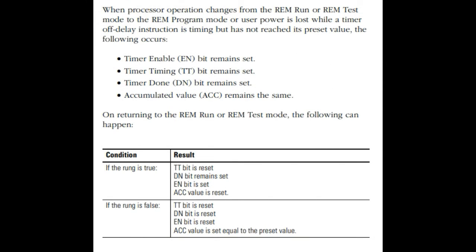When processor operation changes from the run or test mode to the program mode, or user power is lost while a timer off delay instruction is timing but has not reached its preset value, the following occurs: Timer enable EN bit remains set. Timer timing TT bit remains set. Timer done DN bit remains set. Accumulated value ACC remains the same.